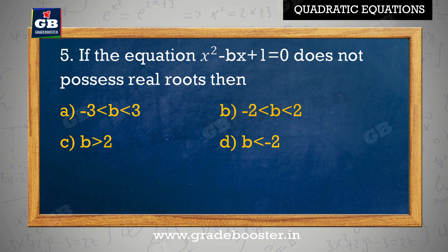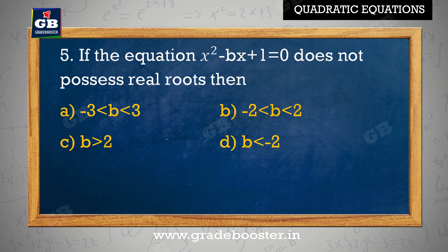If the equation x square minus bx plus 1 equal to 0 does not possess real roots, then: A. minus 3 less than b less than 3, B. minus 2 less than b less than 2, C. b greater than 2, D. b less than minus 2.